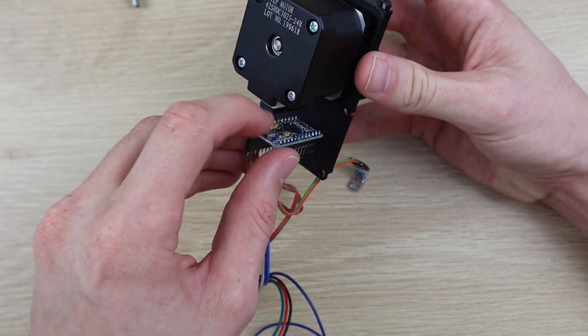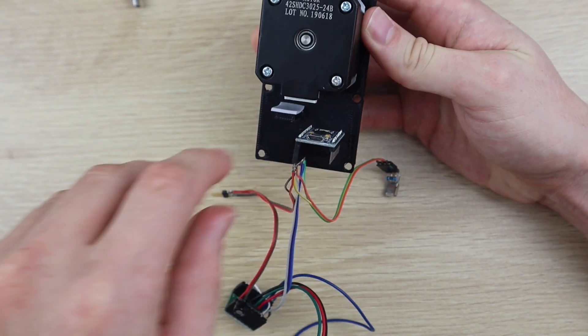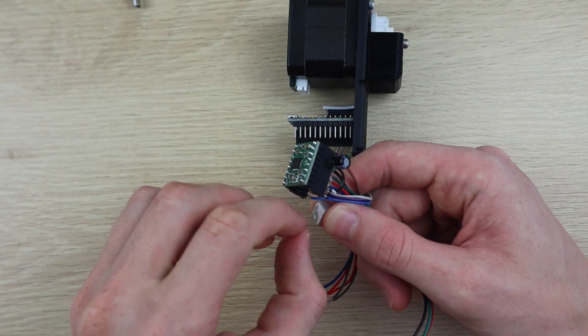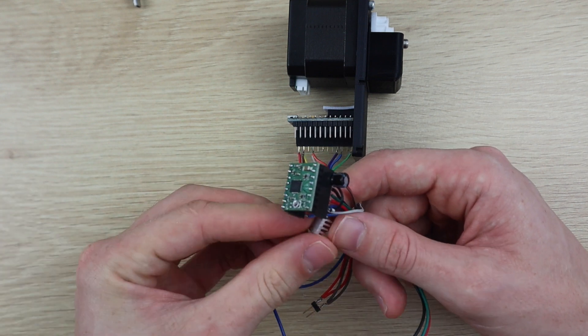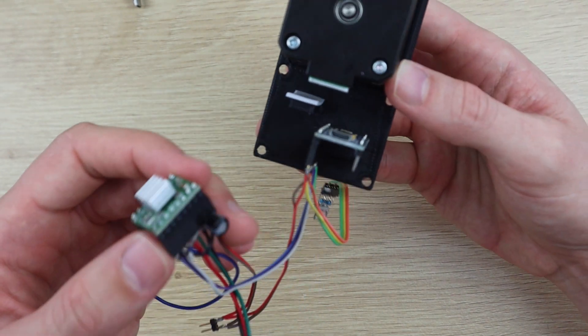Once you're happy with the code, stick the Arduino and motor driver to the supports in the housing using double sided tape. Don't forget to add your heatsink to your motor driver too. Don't worry about needing to make adjustments to your code. The USB port on your Arduino is still accessible with it stuck in place.